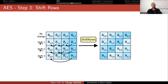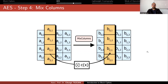For ShiftRows, you keep the first row identical. The second row is rotated one byte to the left, the third row two bytes, and the fourth row three bytes. This provides some diffusion across the rows, but it is not sufficient on its own.